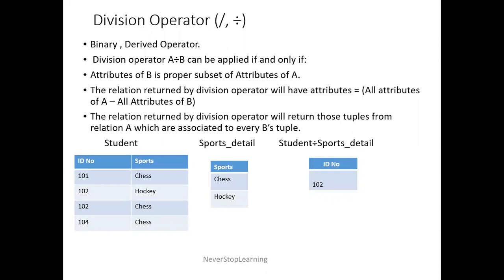Here are some conditions. Division Operator A divided by B can be applied if and only if these conditions are satisfied. The first condition is: Attributes of B must be a proper subset of attributes of A. If there are two tables A and B and I want to do A divided by B, then attributes of B should be a proper subset of A.